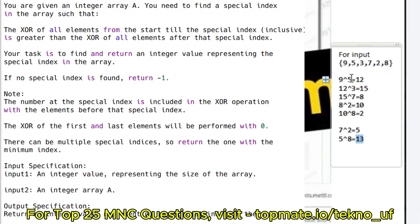For example, suppose 7 is at index 2 in the array [0,1,2,3...]. If I perform the XOR operation up to index 2, that value is greater than the XOR of the two elements after it, like 2 and 8. This is exactly what the problem states: the XOR of all elements from the start till the special index is greater than the XOR of elements after the special index.